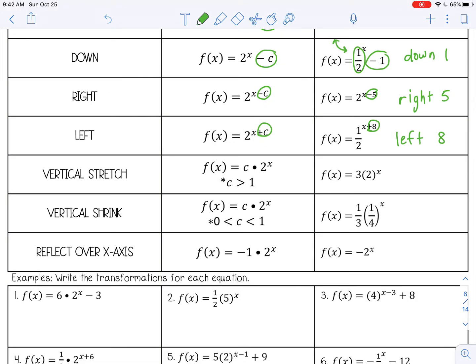A vertical stretch is where you multiply the function by a number greater than 1. So here I'm multiplying by 3. It would have a vertical stretch of 3. And what that means is it's going to just rise even faster than it already is. So it's going to stretch out vertically.